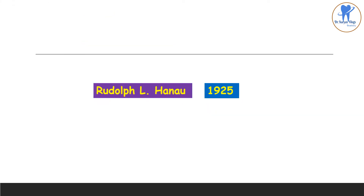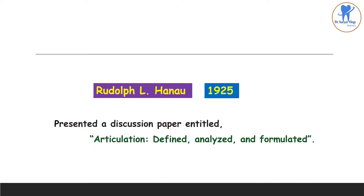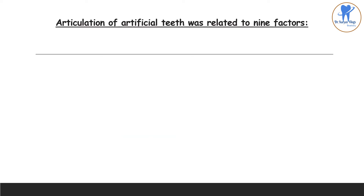In 1925, Rudolf L. Hanau presented a discussion paper entitled 'Articulation: Defined, Analyzed and Formulated.' The articulation of the artificial teeth was related to nine factors. So mainly there are nine factors in relation to the articulation of artificial teeth.